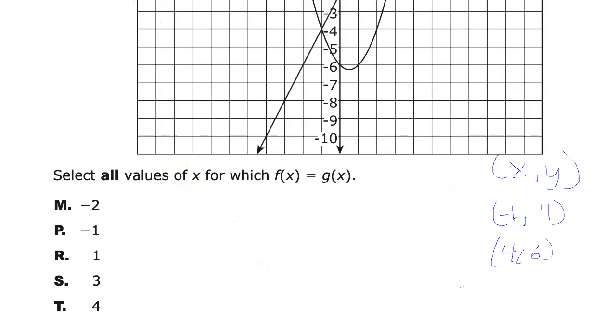Wipe this out. So I'm going to select all values for x, for which f(x) is equal to g(x). These are my two points where they match up. Here's an x value. Here's an x value. So P and T, in this case, are the answers that I'm going to choose.